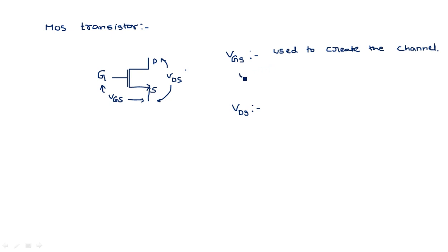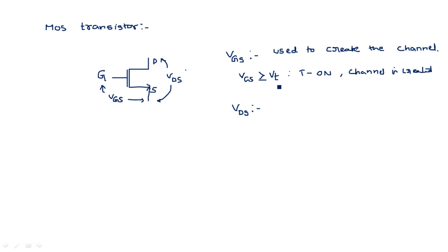When VGS is greater than or equal to VT, the transistor comes into the on state — meaning the channel is created. VT is the minimum threshold voltage required to make the transistor on; it is the minimum voltage required for the transistor to create the channel. When the input voltage meets this minimum required voltage VT, the transistor is said to be in the on state.